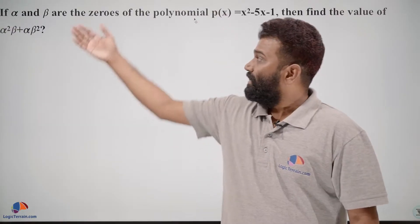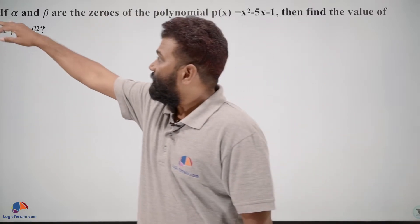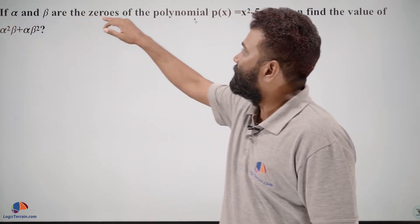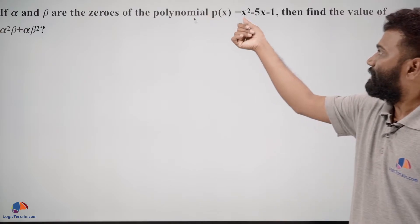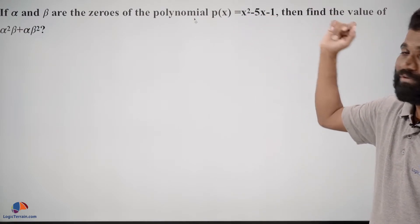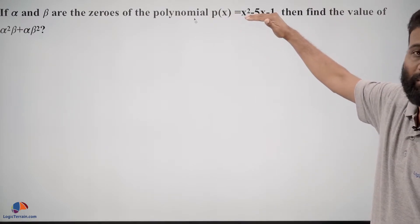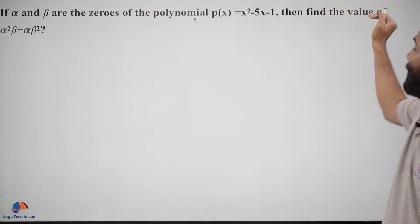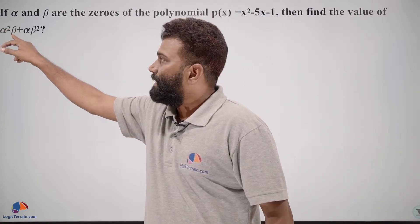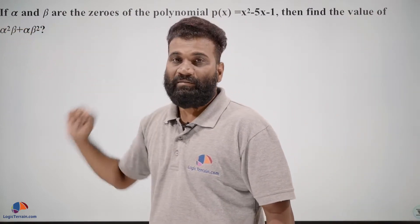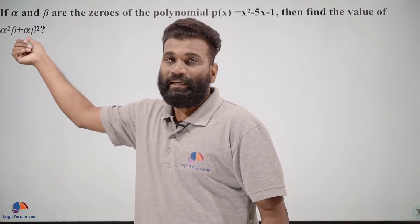Hello dear students, here is our question. If alpha and beta are the zeros of the polynomial p(x) = x² - 5x - 1, then find the value of α²β + αβ². We have to find this value.